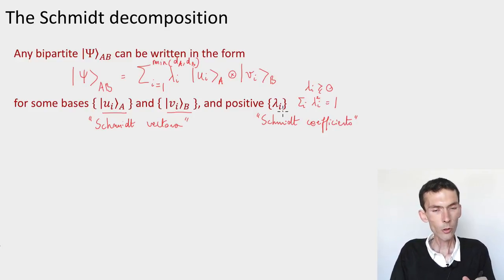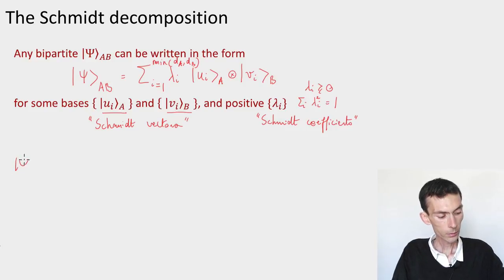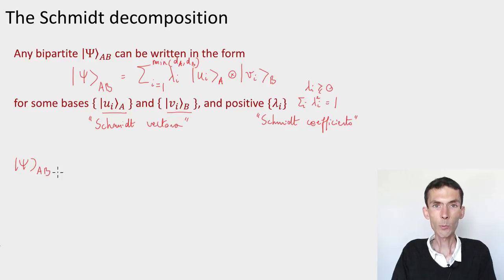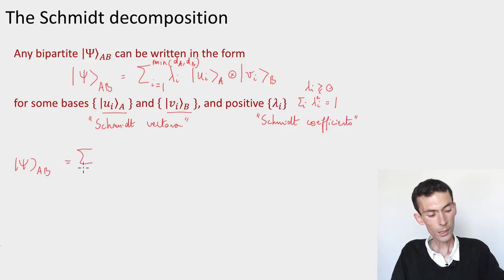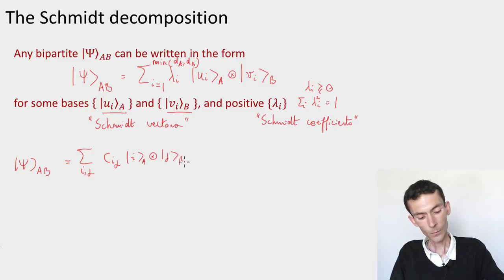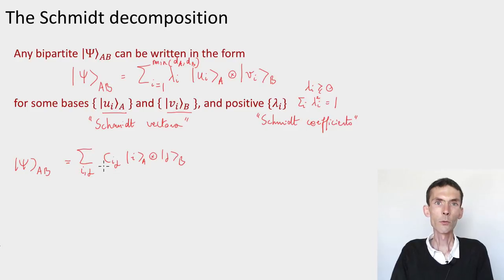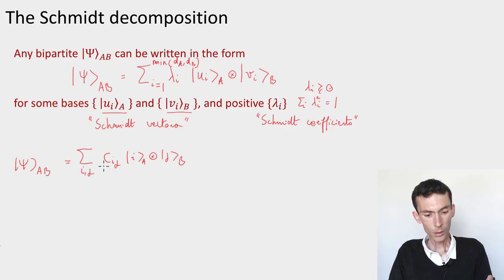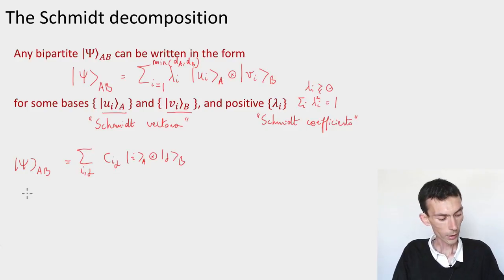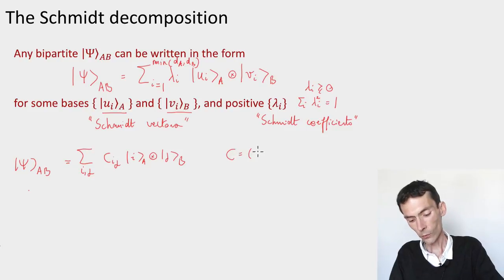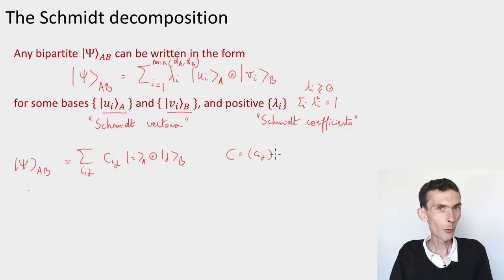Why is this true? Let's see a brief proof. Take a general state |ψ⟩_AB. We can always write it using arbitrary bases as the sum over i and j of coefficients c_ij |i⟩_A ⊗ |j⟩_B. The difference from the Schmidt decomposition is that we have a sum over two indices. We can look at these coefficients as a matrix C with entries c_ij, and then apply the singular value decomposition to C — we can always write it as a sum over k of coefficients α_k times vectors u_k and v_k.